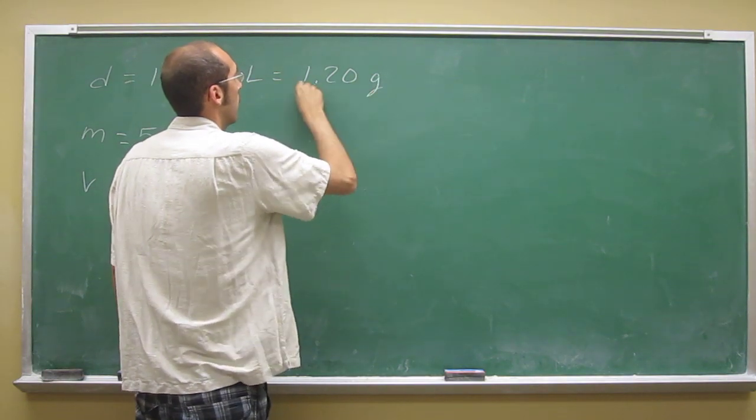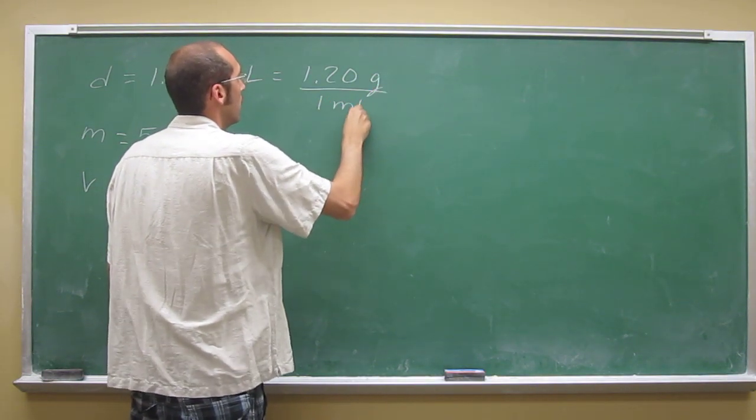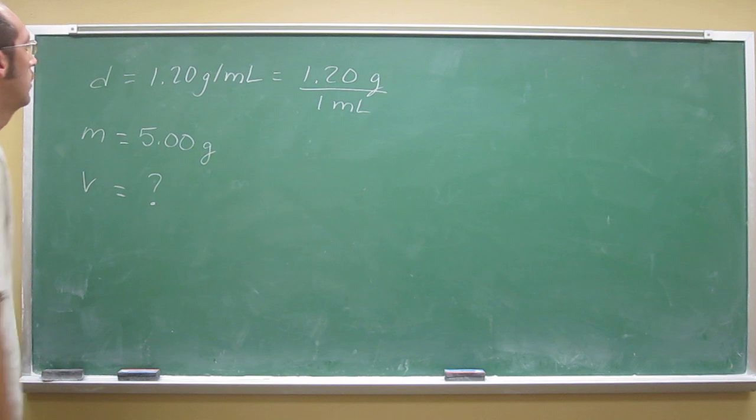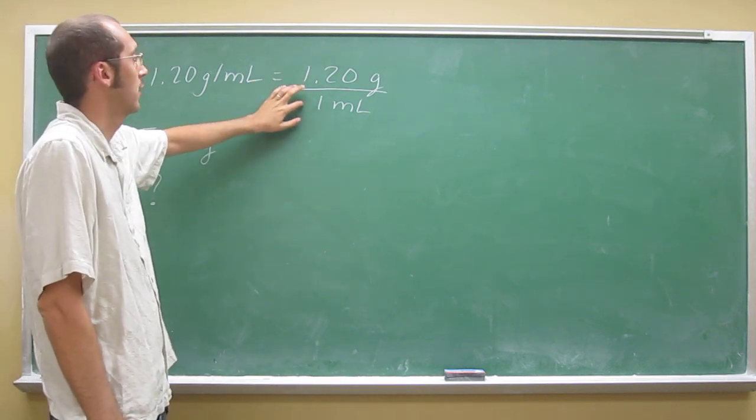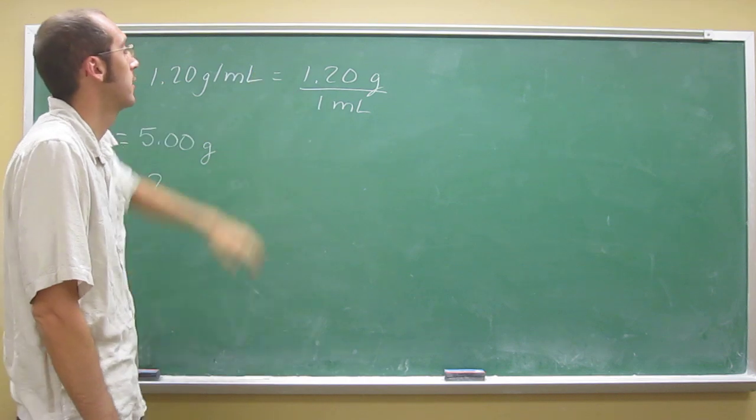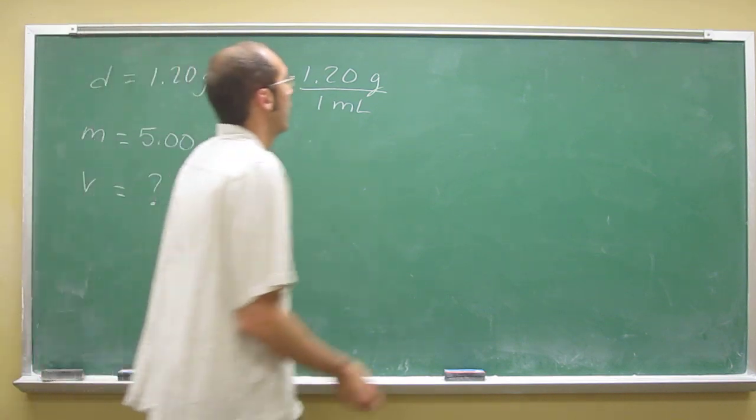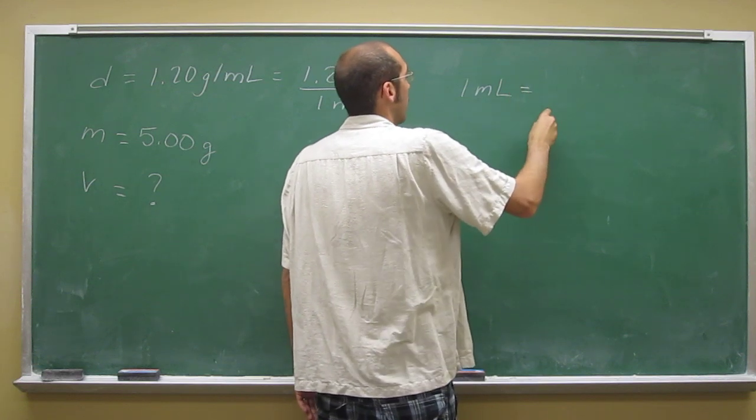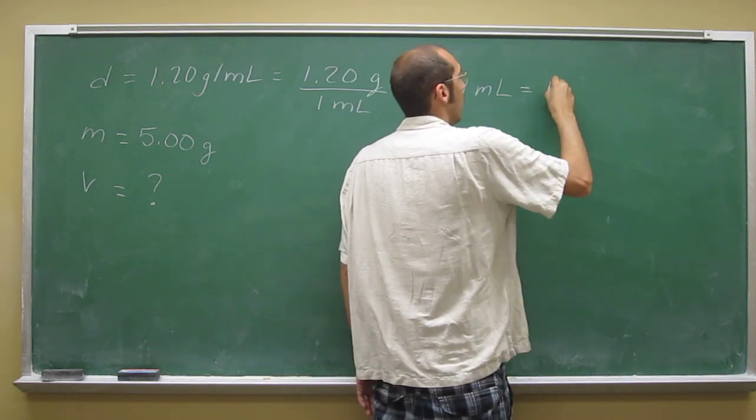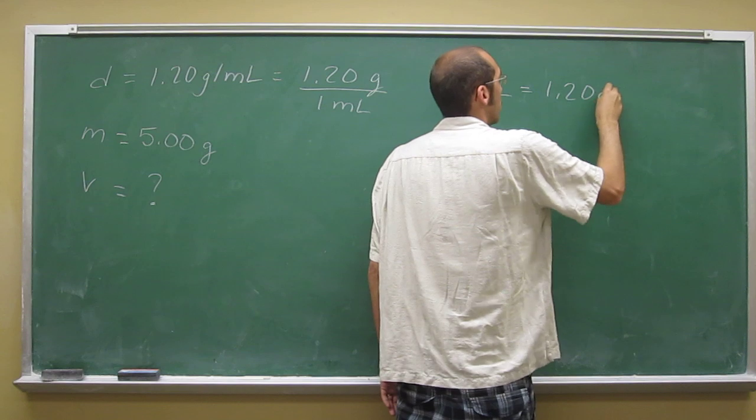1.20 grams per 1 mil, like that. So this here, this density, this is just a conversion factor for whatever liquid this is. This is saying that for every 1 milliliter of this liquid, it weighs 1.20 grams.